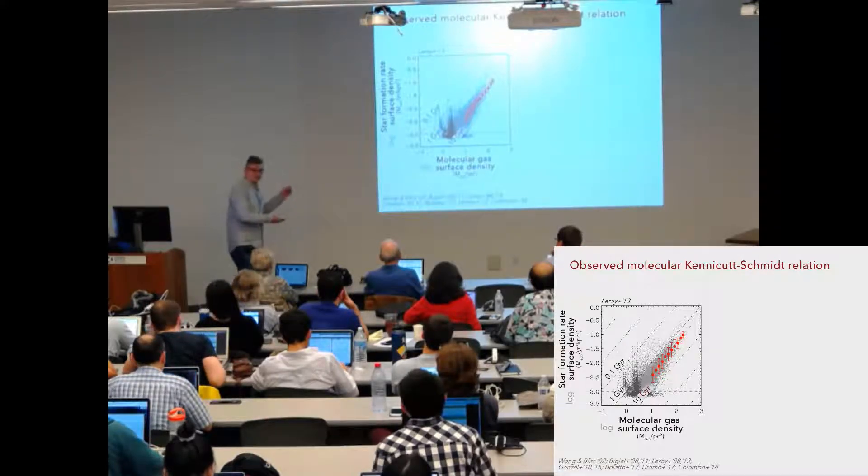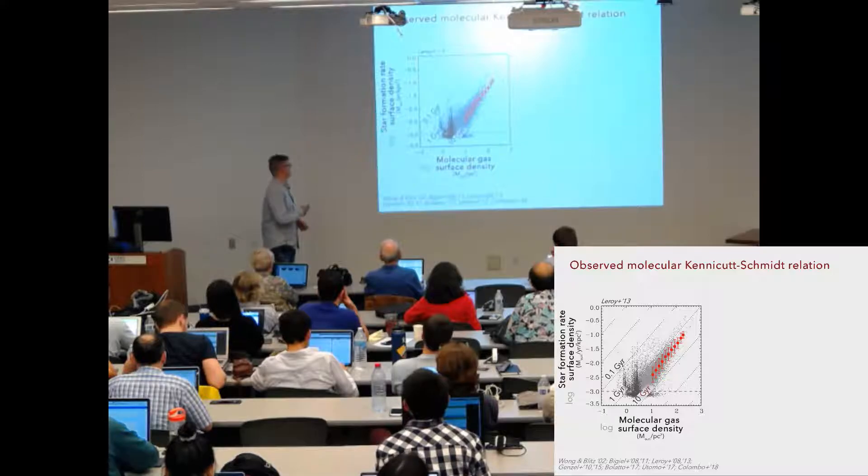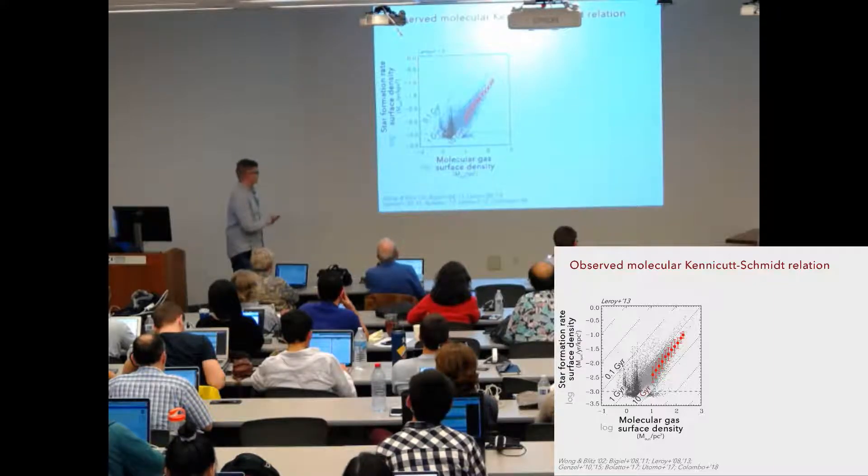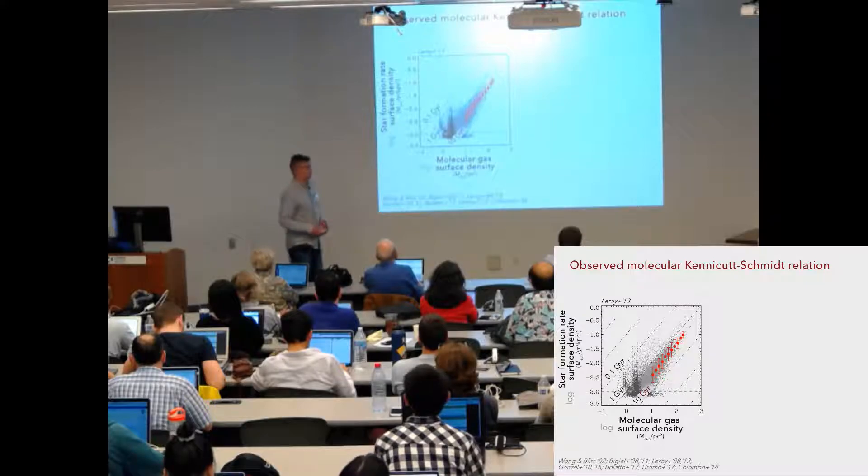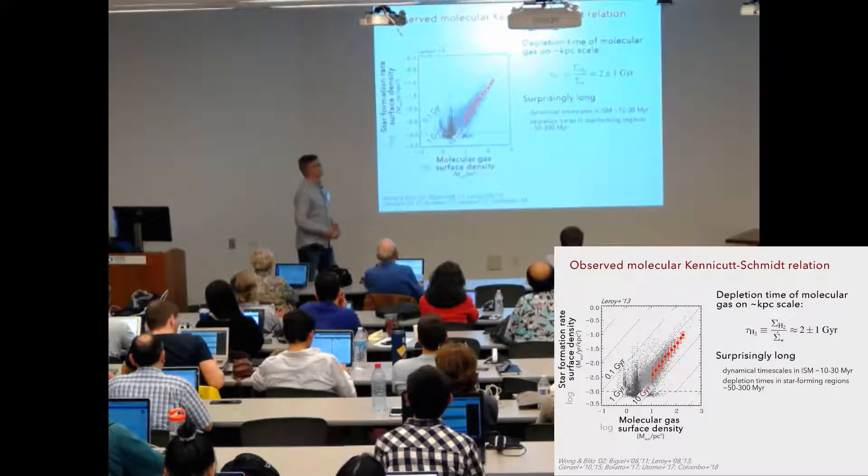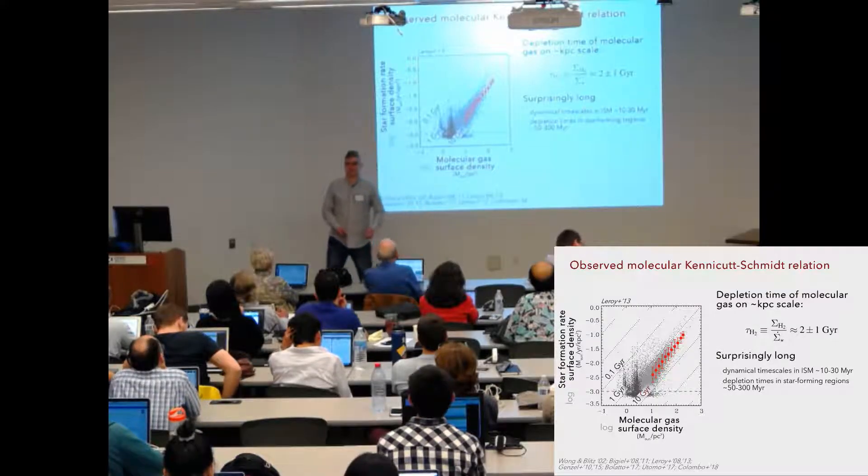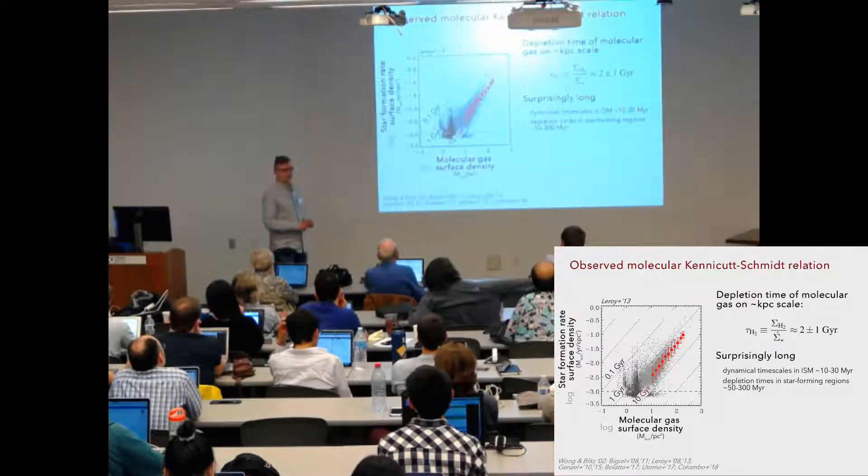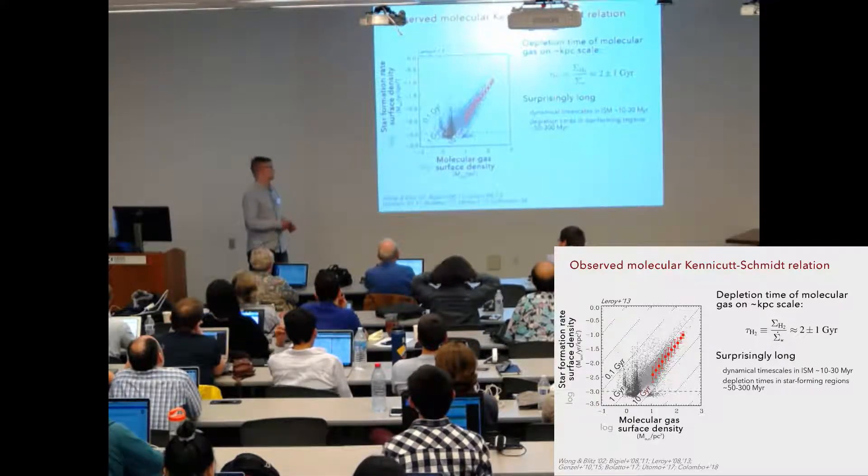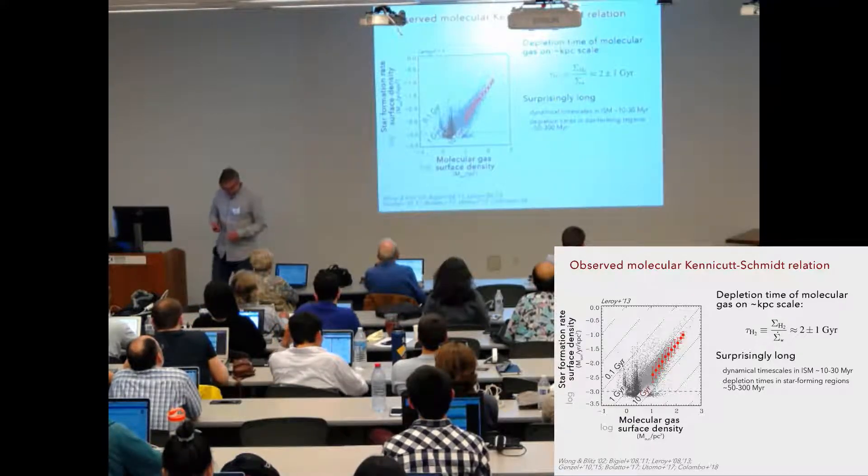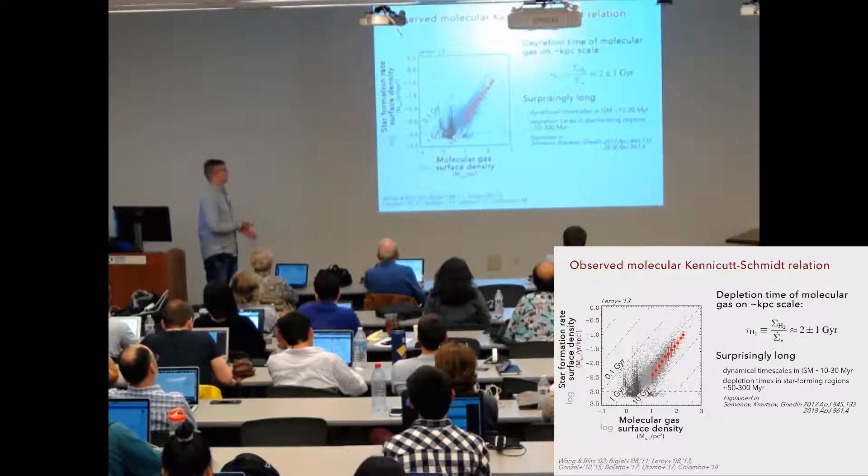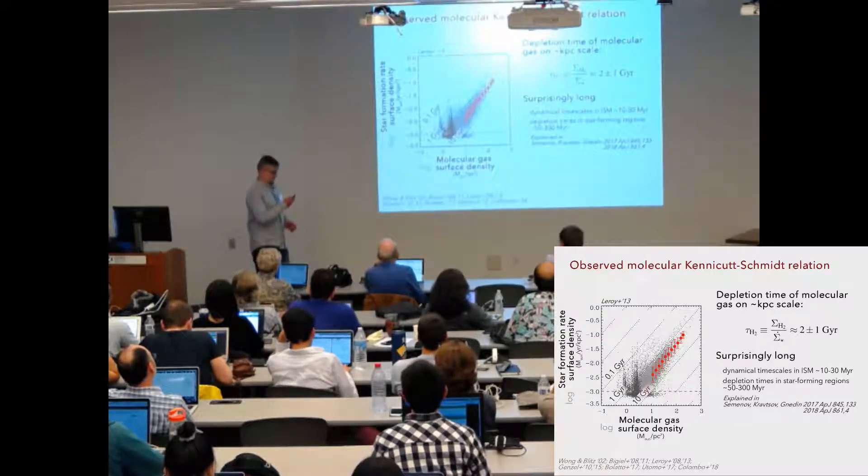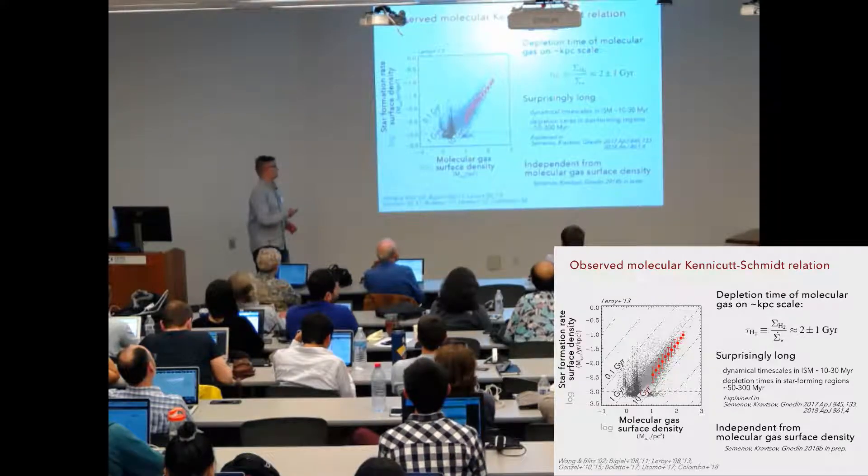Such correlation is expected because both molecular gas and star formation rate both follow dense state of the gas. However, the normalization and the slope of this relation which is observed are both quite surprising. First of all, the normalization tells us that the characteristic depletion time of molecular gas is on the order of two billion years, which is very long. It's much longer than any dynamical time scales in the ISM, and this means that on kiloparsec scales, star formation is extremely inefficient. And this was what I was talking about last time, so I explained why depletion times are long. And this time I'll be talking about the second issue, about the origin of the linear slope.